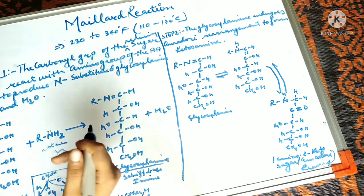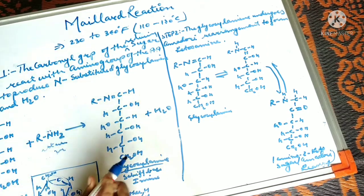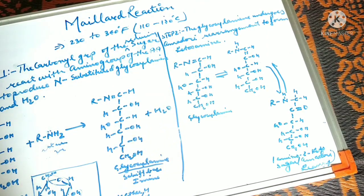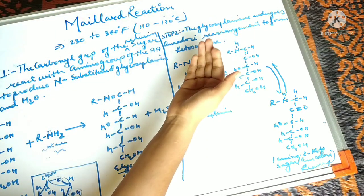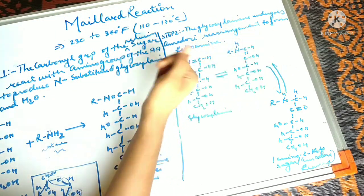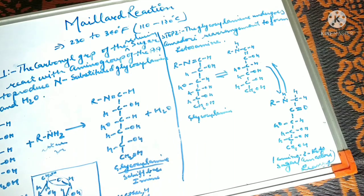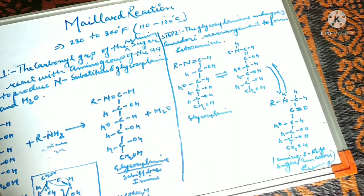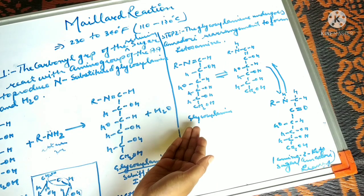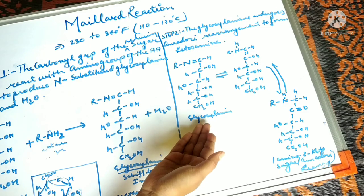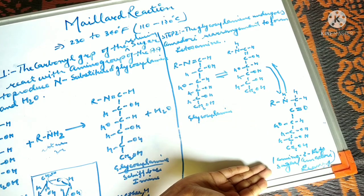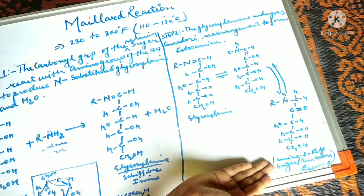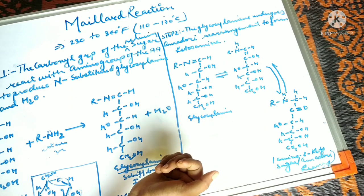After the formation of the glycosylamine, it undergoes the Amadori rearrangement to form the ketose amine. The Amadori rearrangement is the process in which the glycosylamine is converted to the 1-amino-2-ketose sugar.